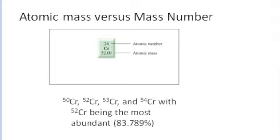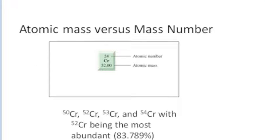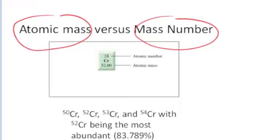One very important distinction as we move along is to distinguish between the term atomic mass and mass number. This is a square out of a periodic table for the element chromium. The atomic number is listed right above the elemental symbol and the atomic mass is listed below the symbol. Whenever we represent elements on the periodic table, we're really representing an average of all the isotopes of that particular element.